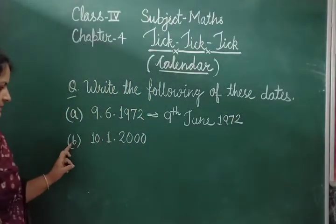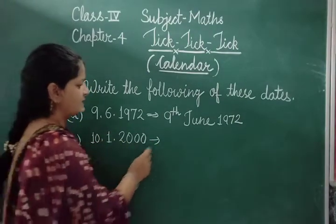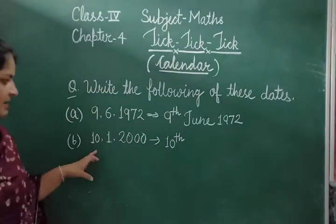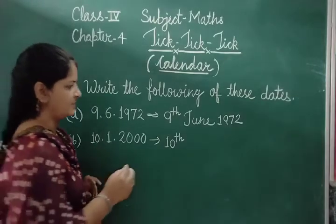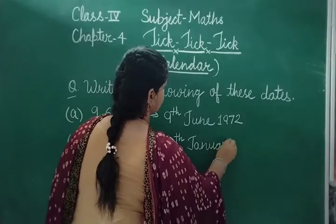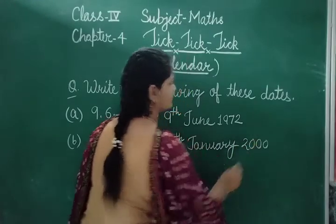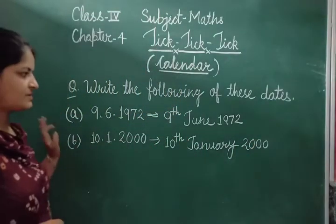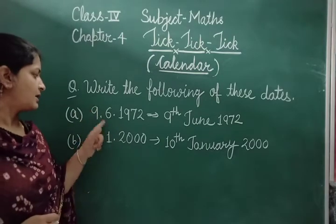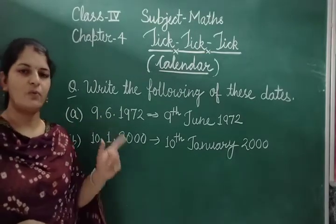And the next question is 10/1/2000. The date is 10th. And 1 — the 1st month is January. So we write 10th January 2000. The year remains the same — 2000. This is how you convert short form: find which month the number corresponds to, and write it out. There are 2 more parts on pages 25 and 26 of your workbook — do those yourself.